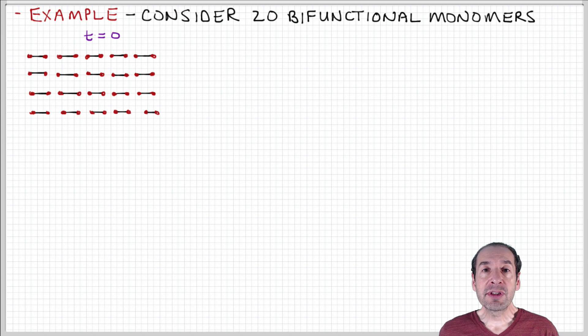I think it's useful to illustrate what that looks like. So that's what I'm trying to do here in the context of this simple system. I have 20 bifunctional monomer units shown here. The black lines are the monomers, and the red dots at the end of each are the functional groups.